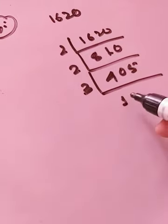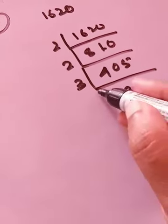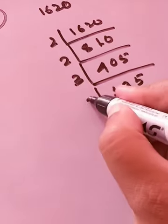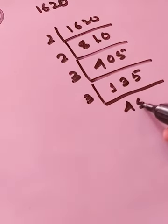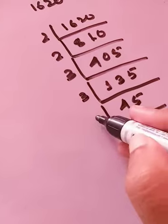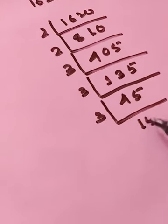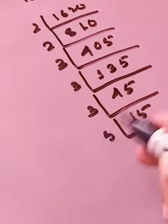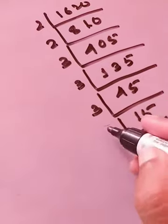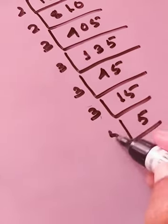Now let us divide by 3. 3|135, 3|45, 3|15. Again we go 3. 3|5... 5|5 and 5|1.